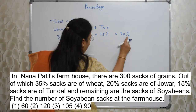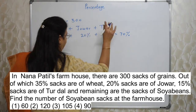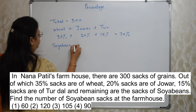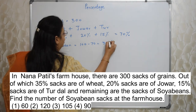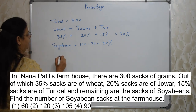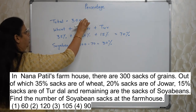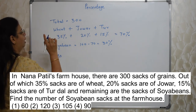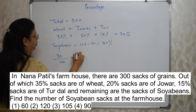Percent means out of 100. Out of 100, 70% is accounted for by wheat, jawar, and tur. So for soya bean, 100 minus 70 = 30% is remaining for soya bean. So now total sacks of soya bean — how to find out? 30% of total 300.